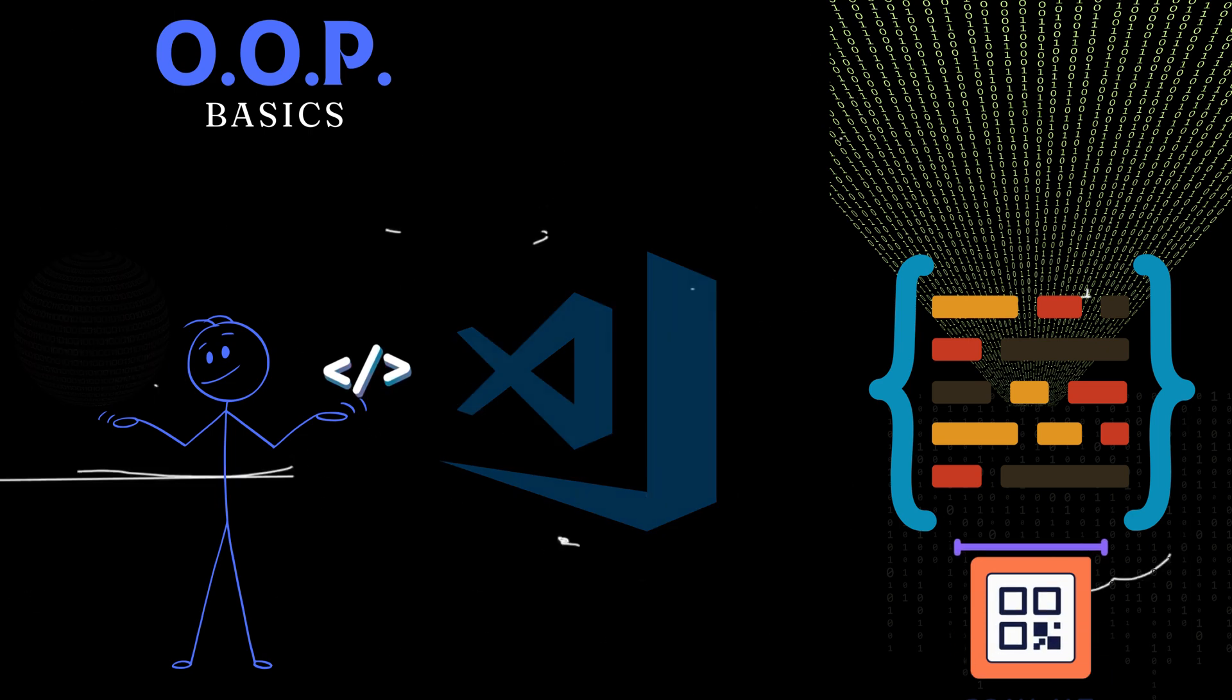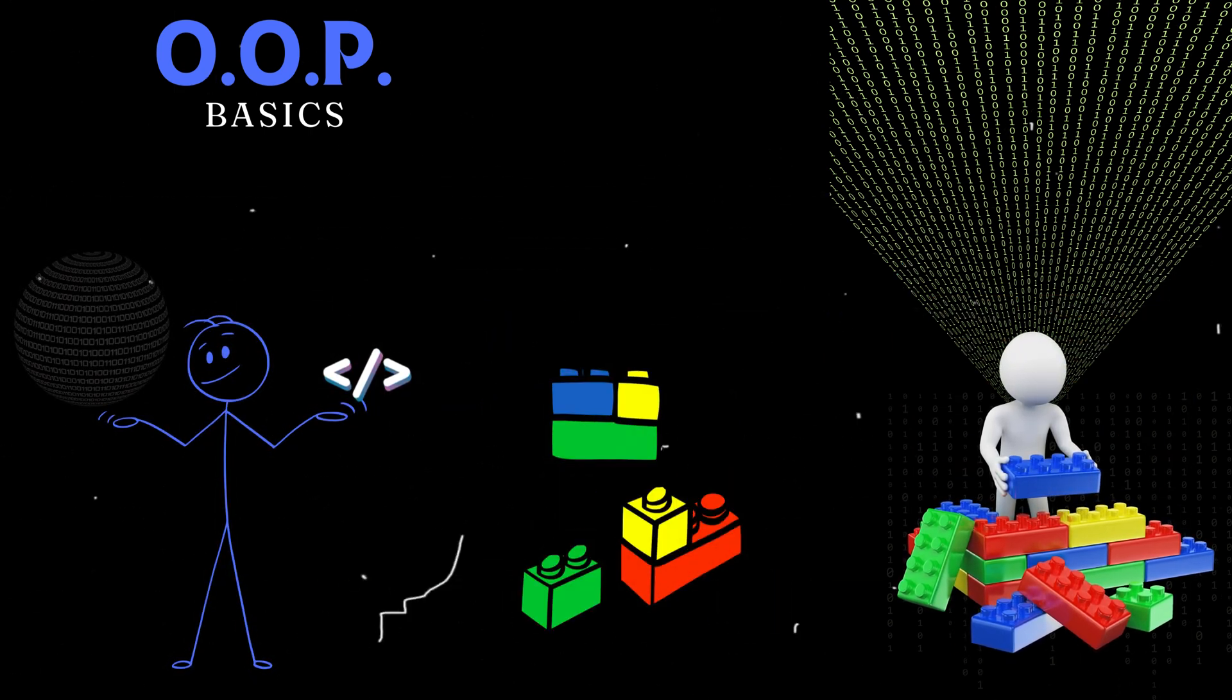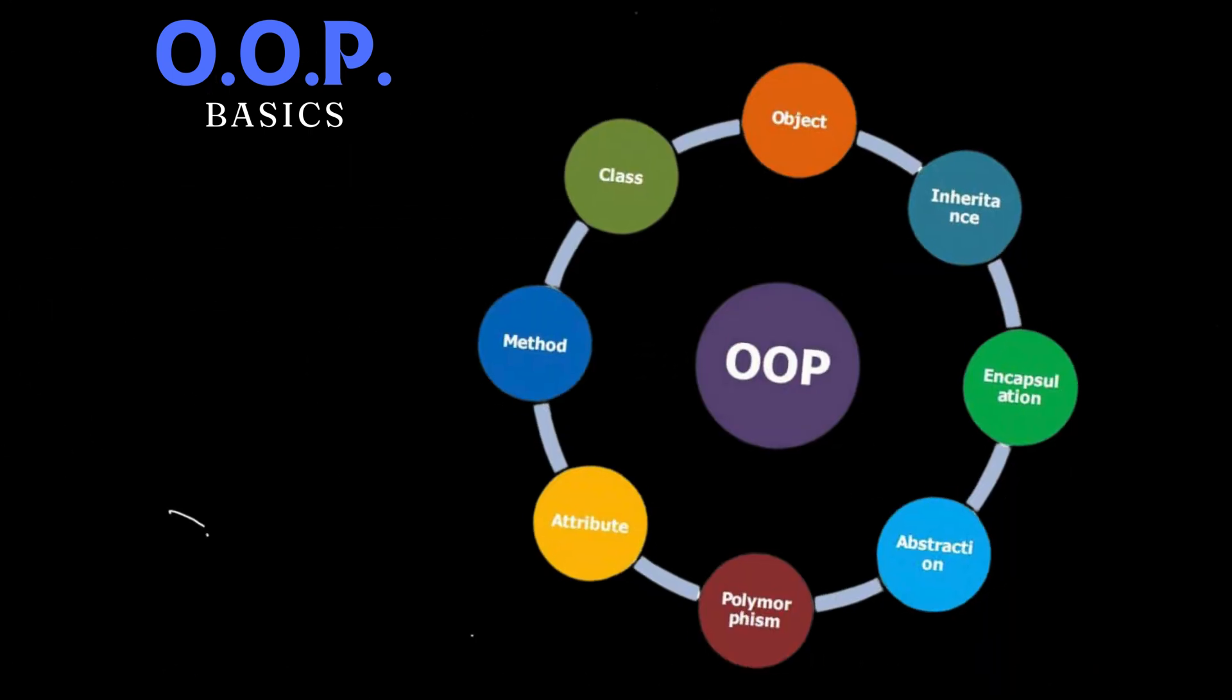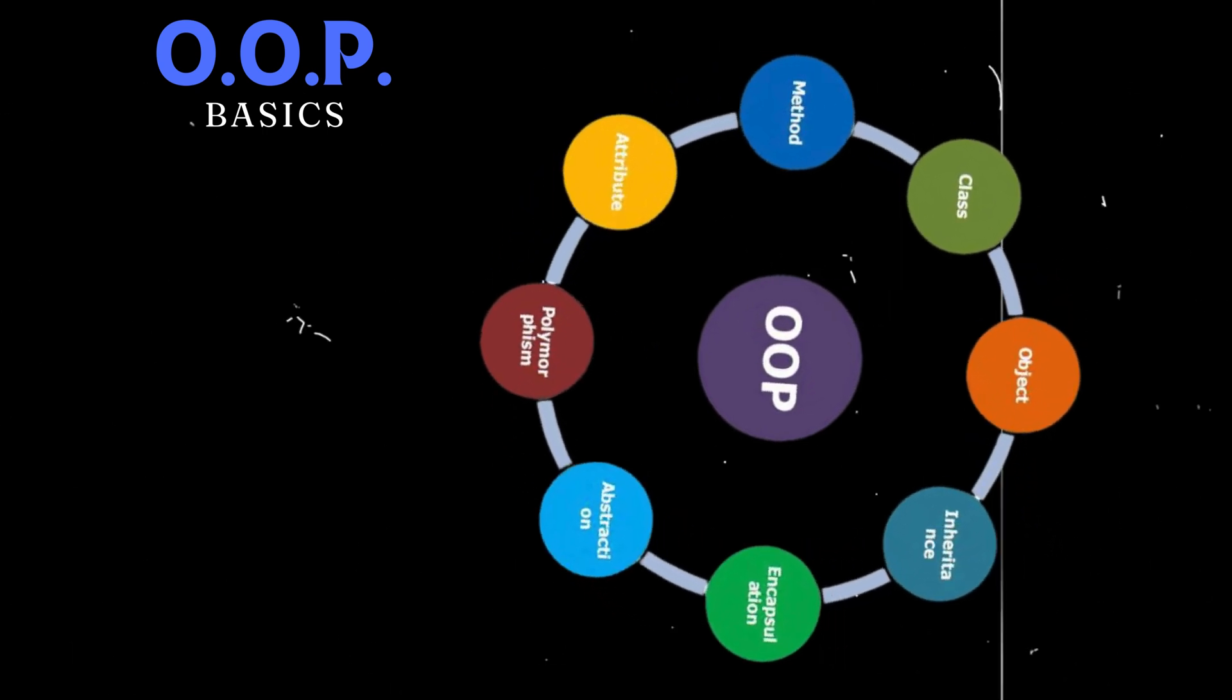It's like building a Lego set. You have individual pieces, objects, that you can combine and rearrange to create something amazing. At the core of OOP are concepts like classes, objects, inheritance, polymorphism, and encapsulation.